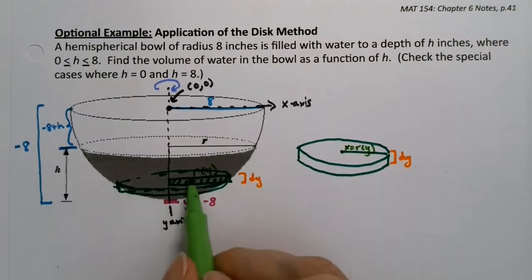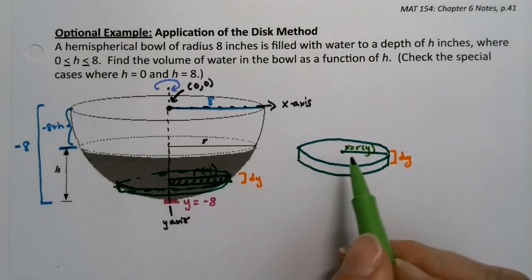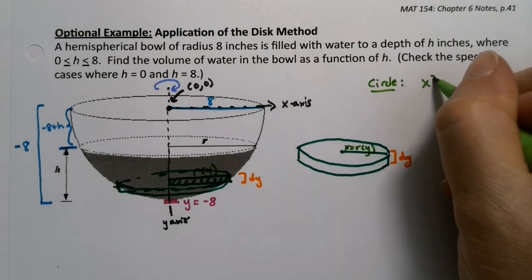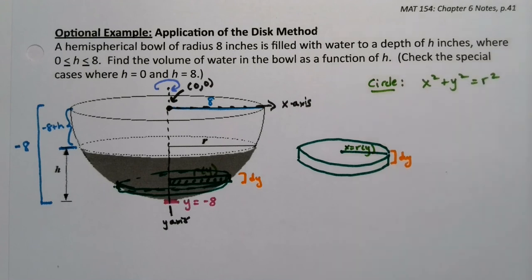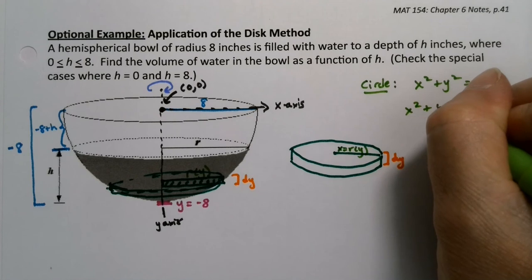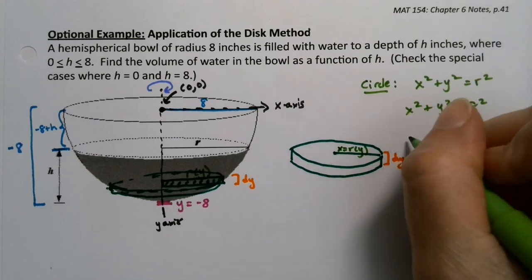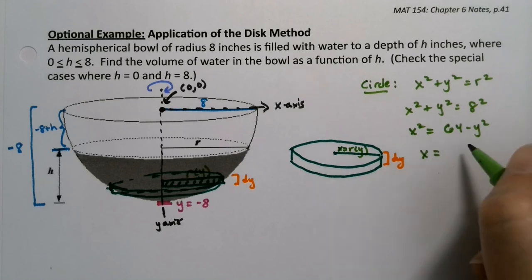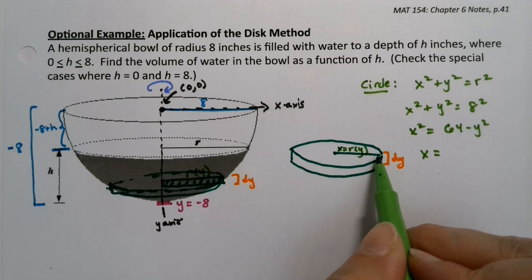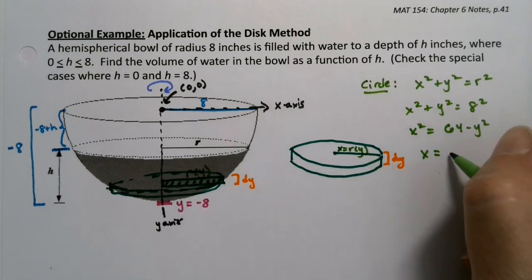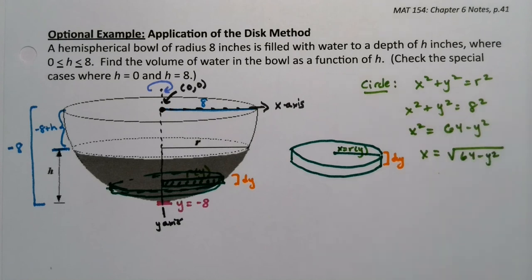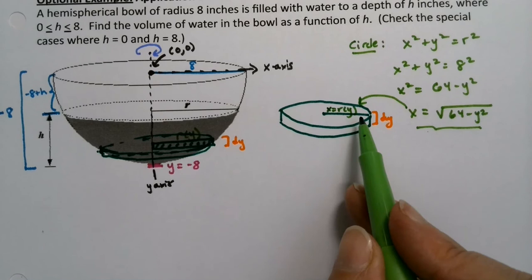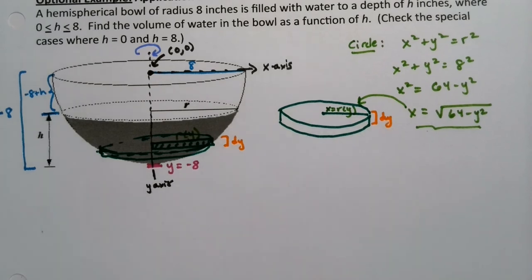When we cut into a hemisphere we get circles, so we use the circle formula: x² + y² = r². Since our bowl has a radius of 8, r² = 64. Solving for x: x² = 64 − y², so x = √(64 − y²). We take only the positive root since we're going in the positive direction. That square root expression is our radius of rotation r(y).